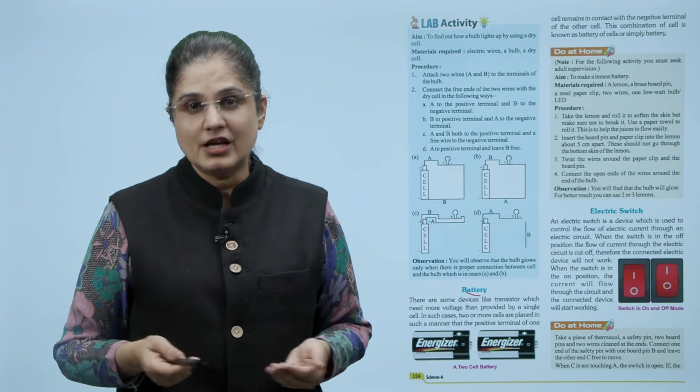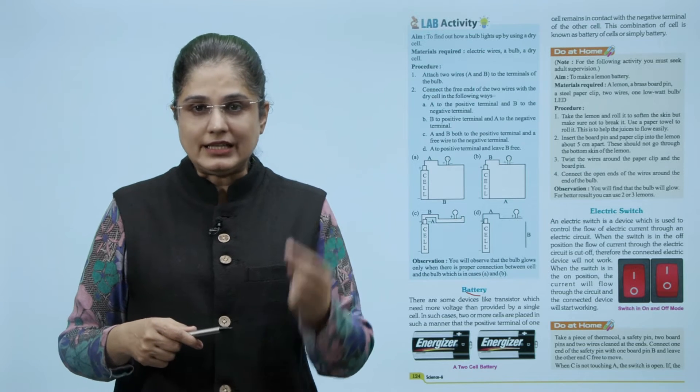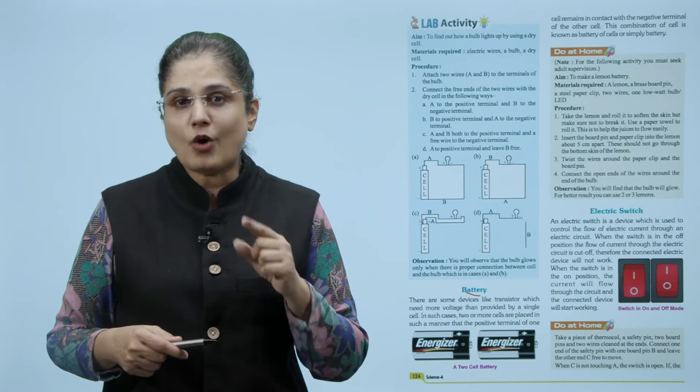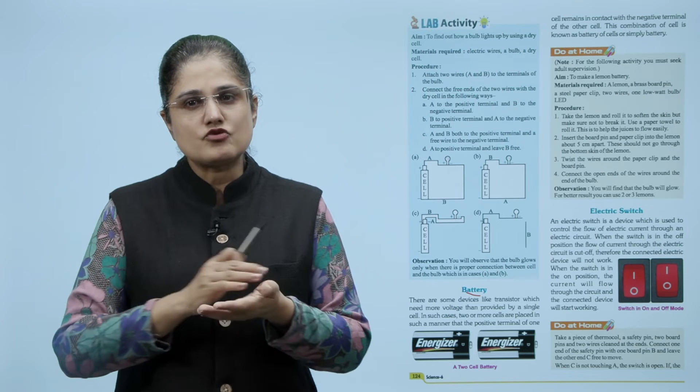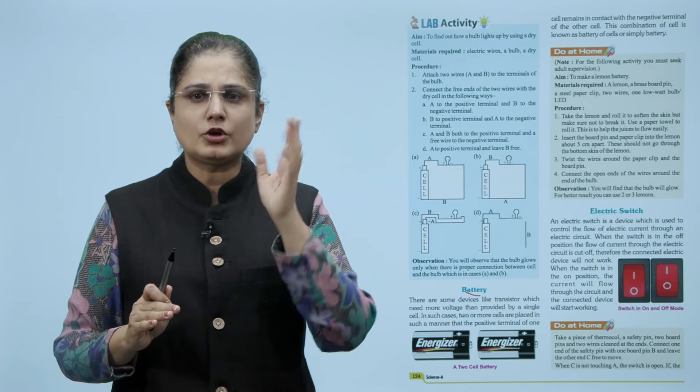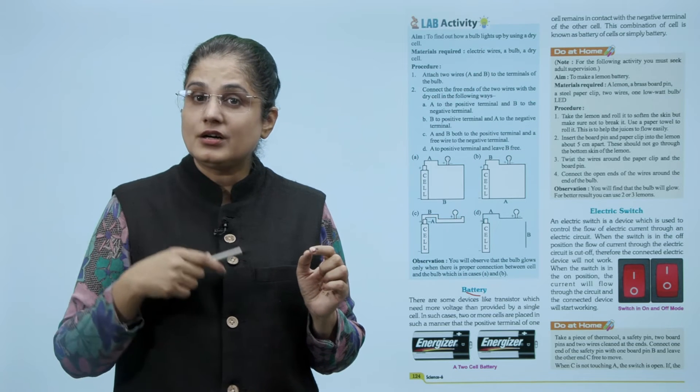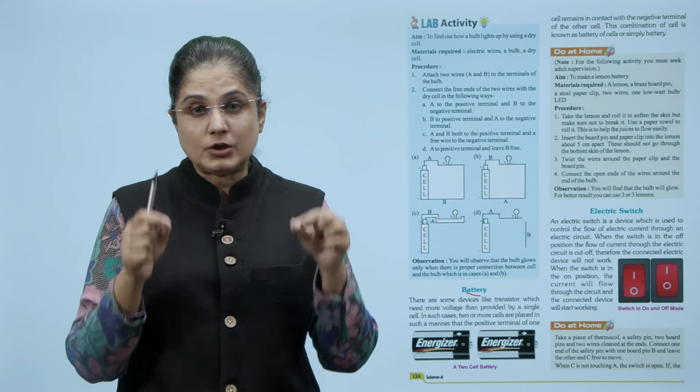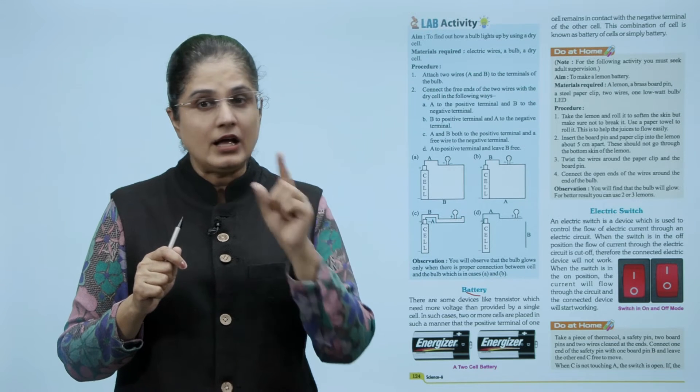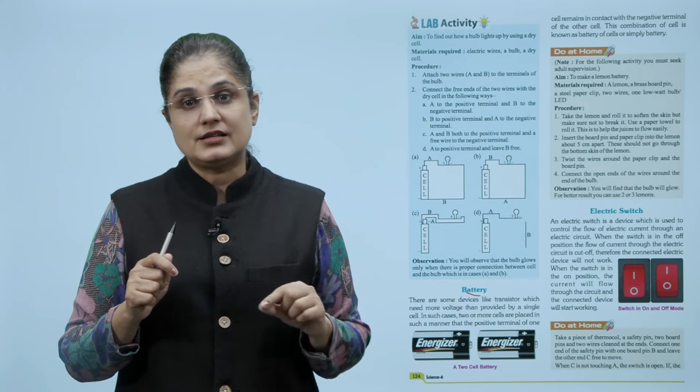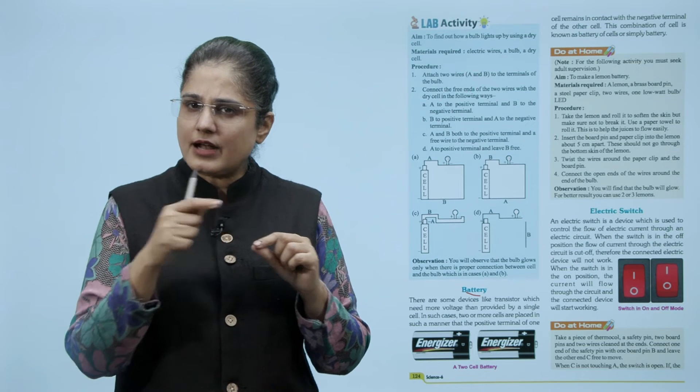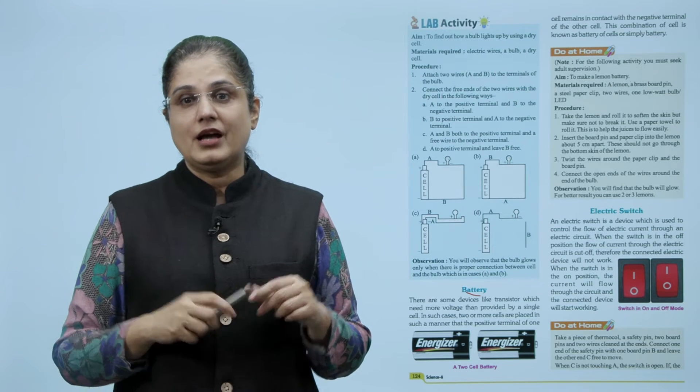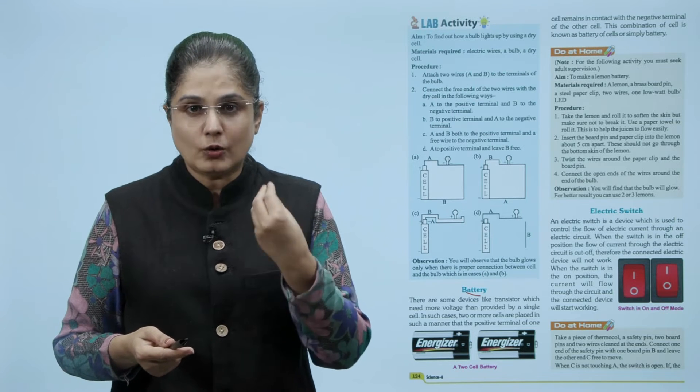Now for the following activity you must seek adult supervision. So how to make a lemon battery: take a lemon, a brass board pin, a steel paper clip, two wires, one low watt bulb or an LED. Take the lemon and roll it to soften the skin but make sure not to break it. This helps to make the juices flow easily. Insert the board pin and paper clip into the lemon about five centimeters apart. They should not go through the bottom skin of the lemon. Twist the wires around the paper clip and the board clip. Connect the open ends of the wires around the end of a bulb. What you will find is that the bulb will glow and for better results you can use two or three lemons.